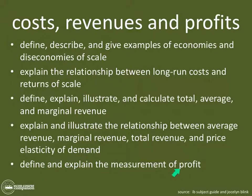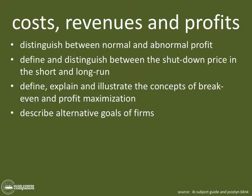Can you define and explain the measures of profit — that's abnormal profit, normal profit, and negative economic profit or loss? Can you distinguish between normal and abnormal profit? Can you define and distinguish between the shutdown price in the short and long run? Can you define, explain, and illustrate the concepts of break-even and profit maximization? You need to know these for the four market structures — though they're really just two: price takers (perfect competition) and price makers (monopoly, monopolistic competition, oligopoly).